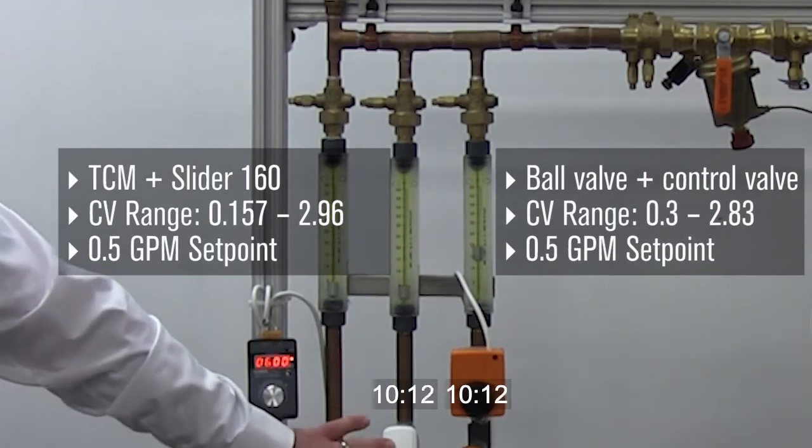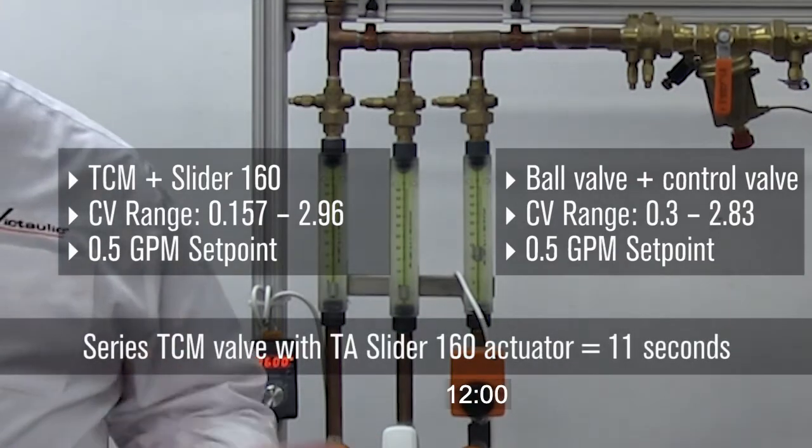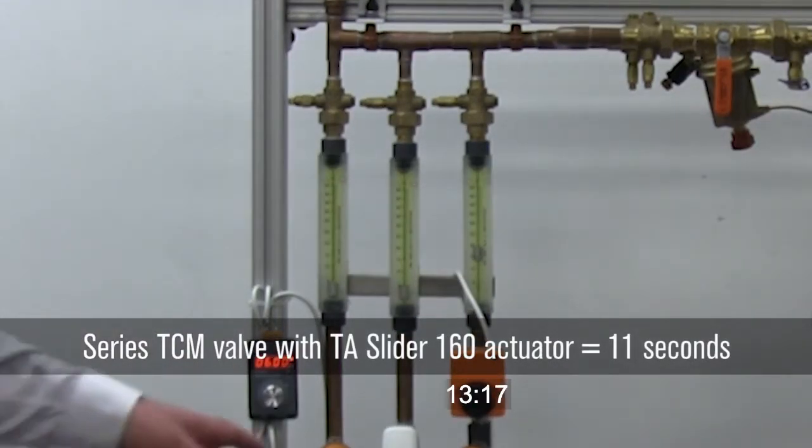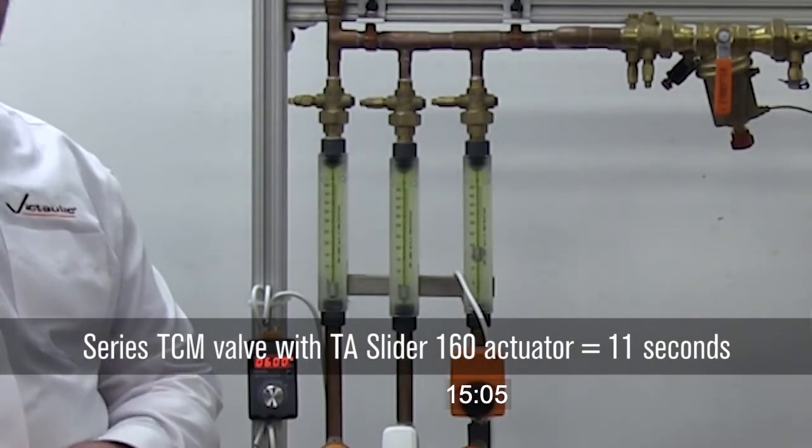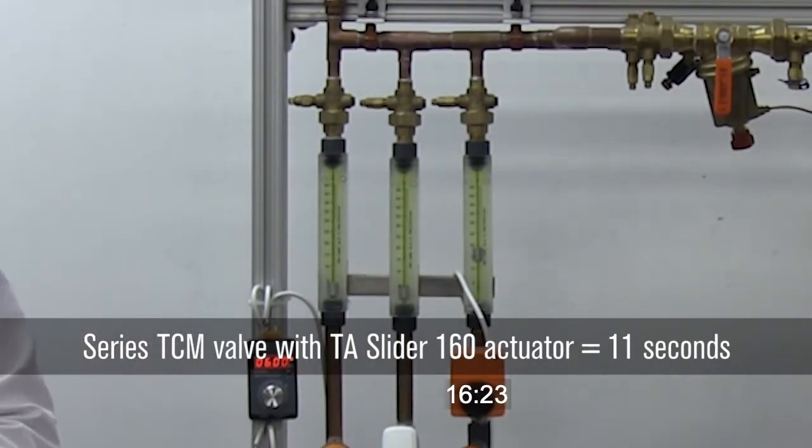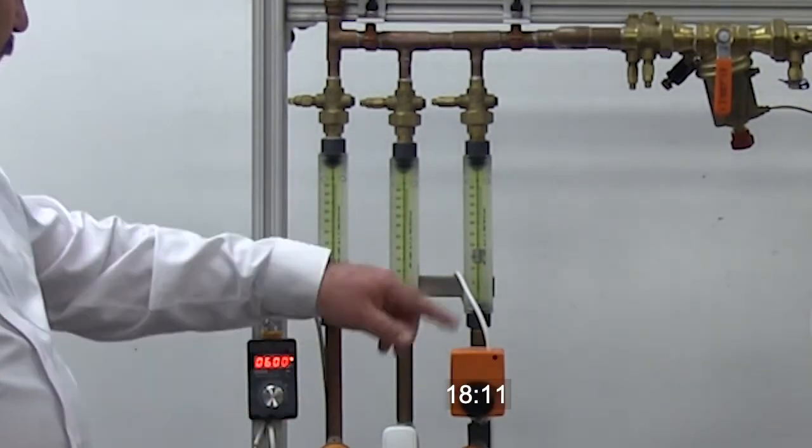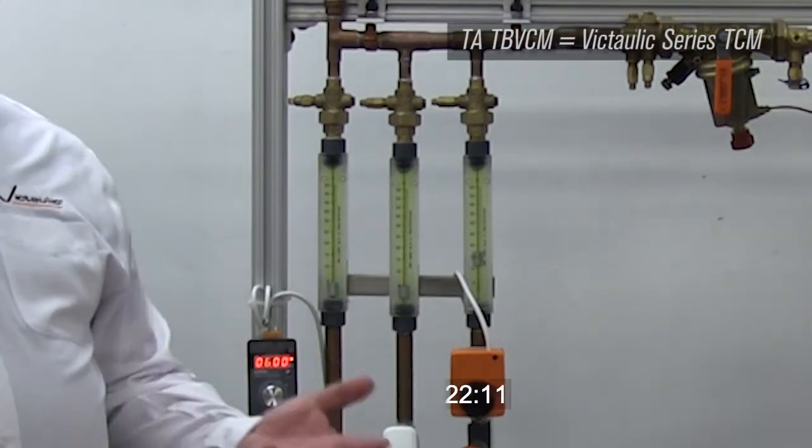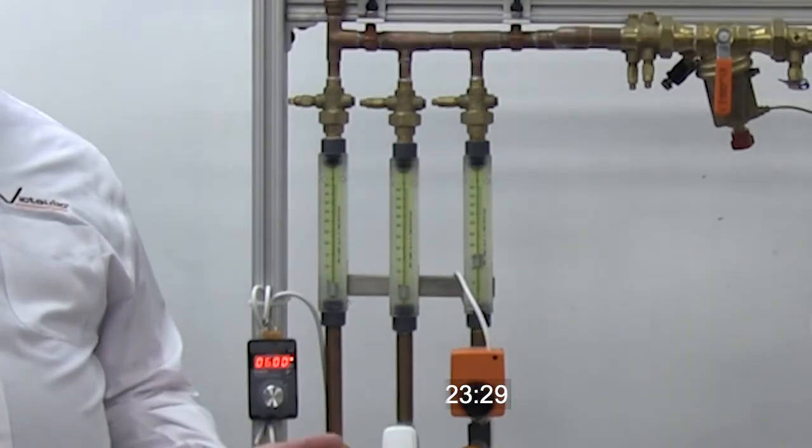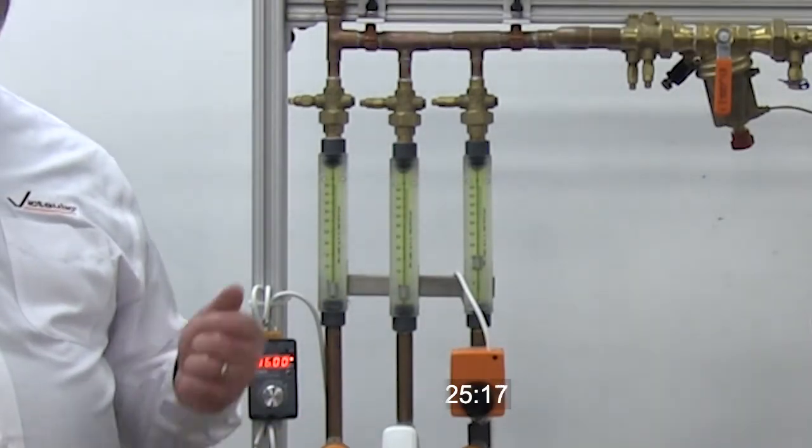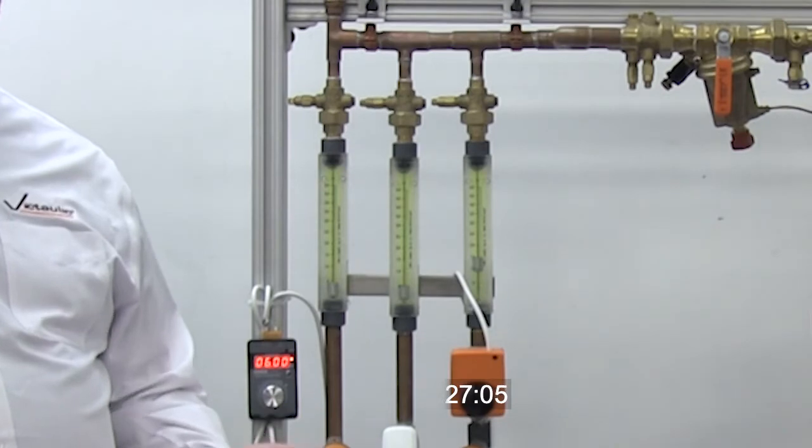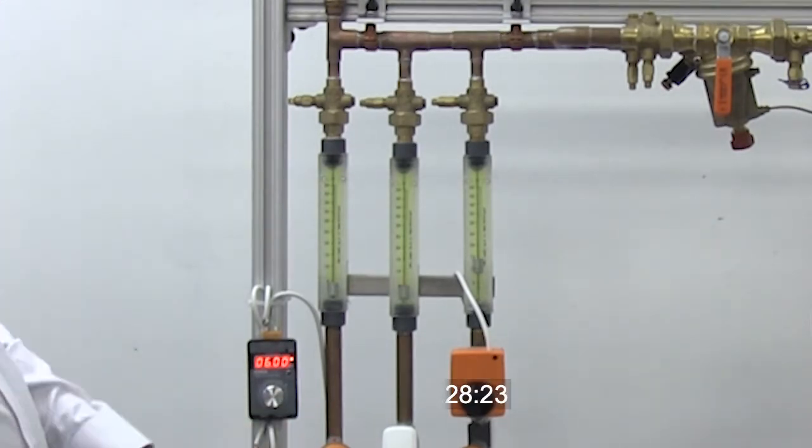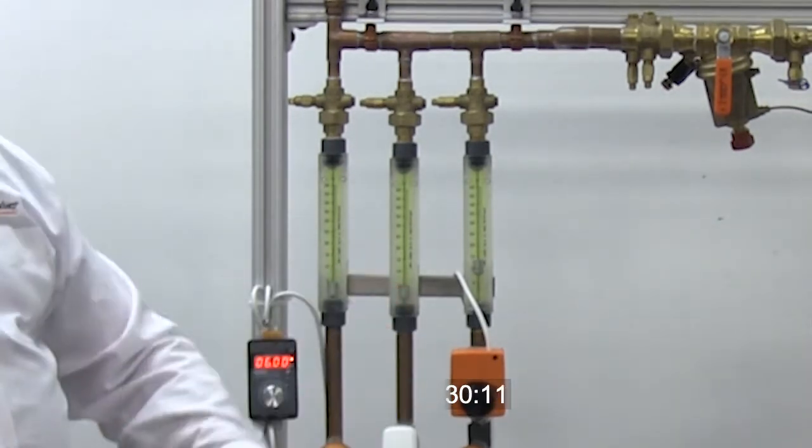Now again, you notice that the Slider gets there very quickly, so quicker control, whereas our quarter turn valve is going to take a little while to get to the point where it needs to be. Now while we're waiting for our quarter turn valve, we'll notice our Slider and our TBVCM has brought us to roughly 20% of the flow rate for the system, so we're right at that 50% heat output for cooling output for the coil. Got there very quickly and it's right where we need it to be.